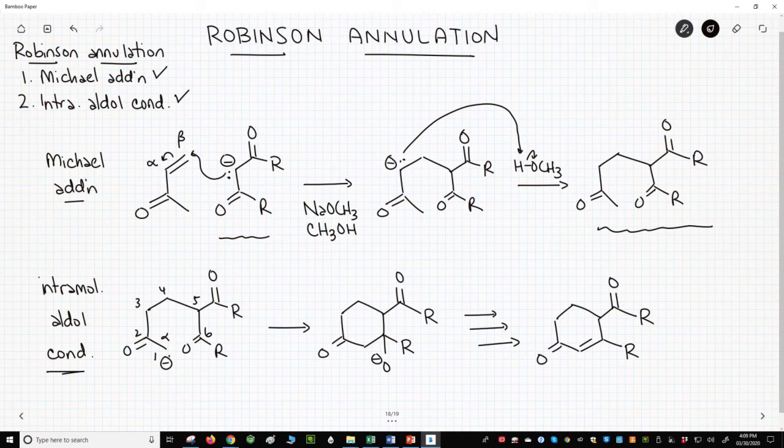We can do an intramolecular attack to form a six-membered ring as a tetrahedral intermediate.